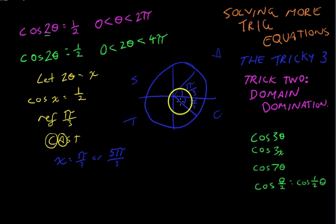So pi on three, five pi on three, seven pi on three, or 11 pi on three.